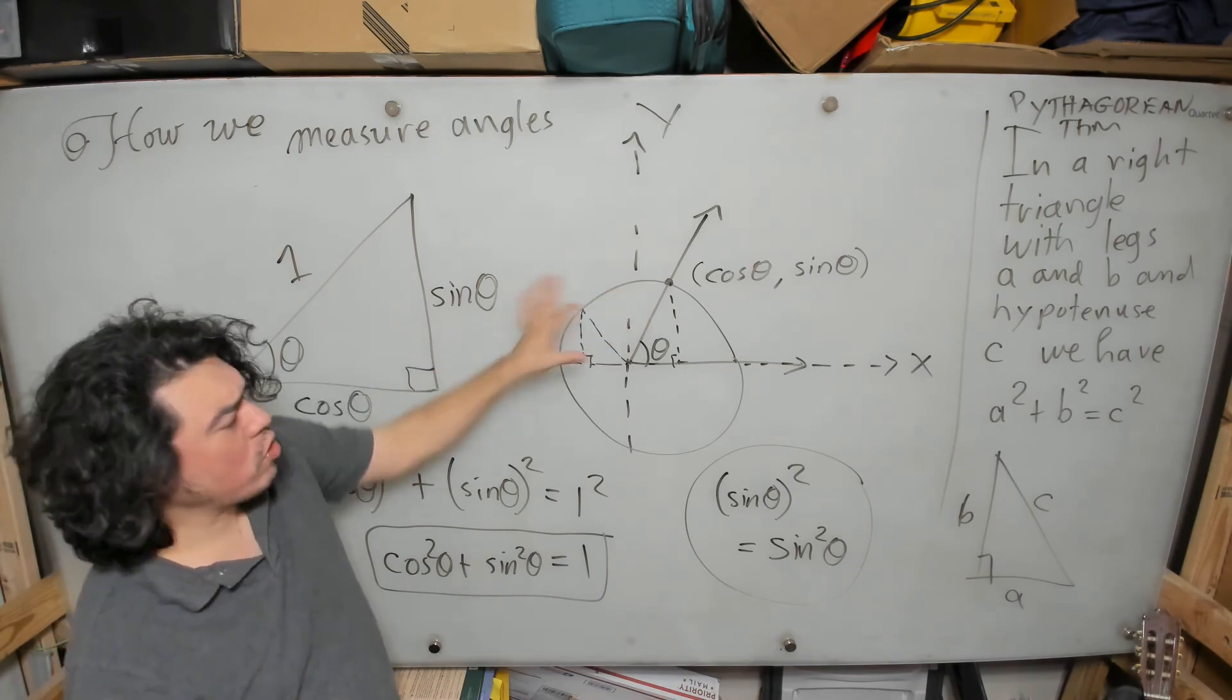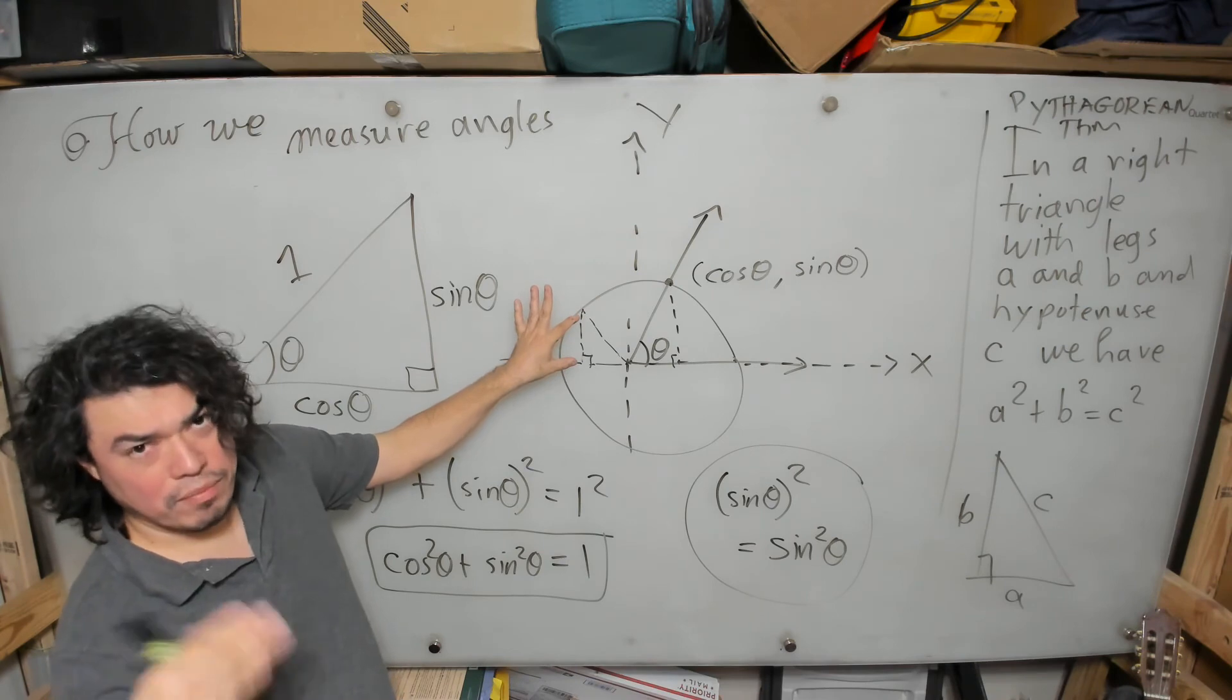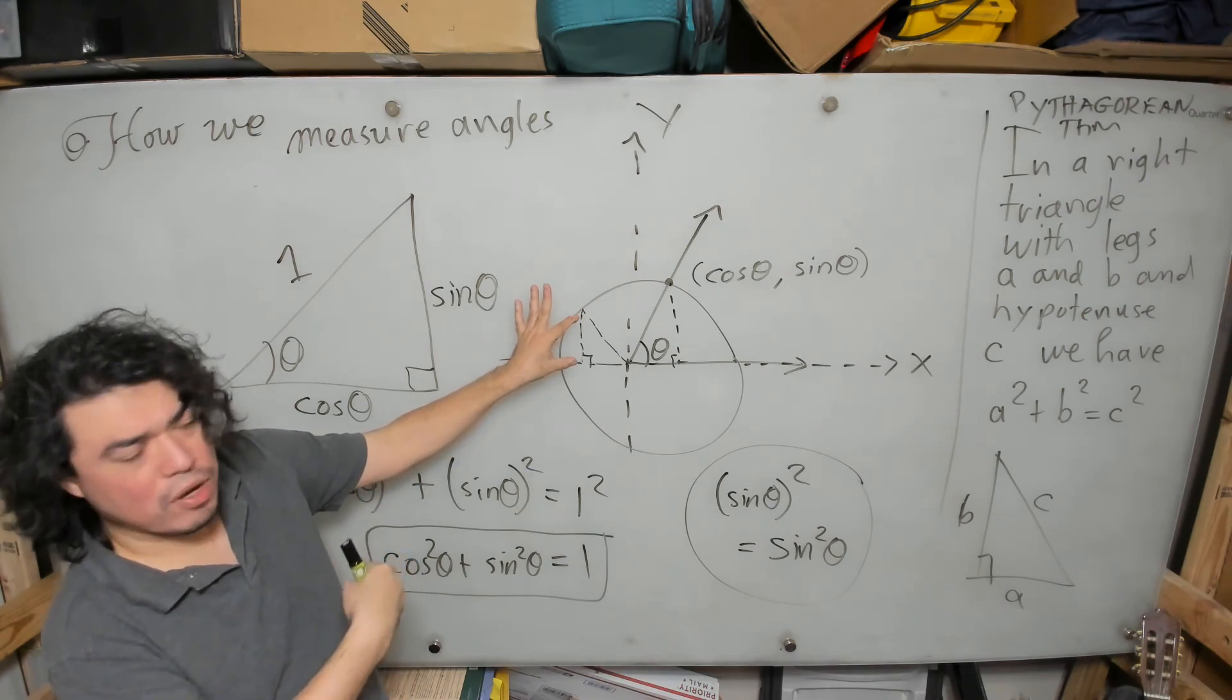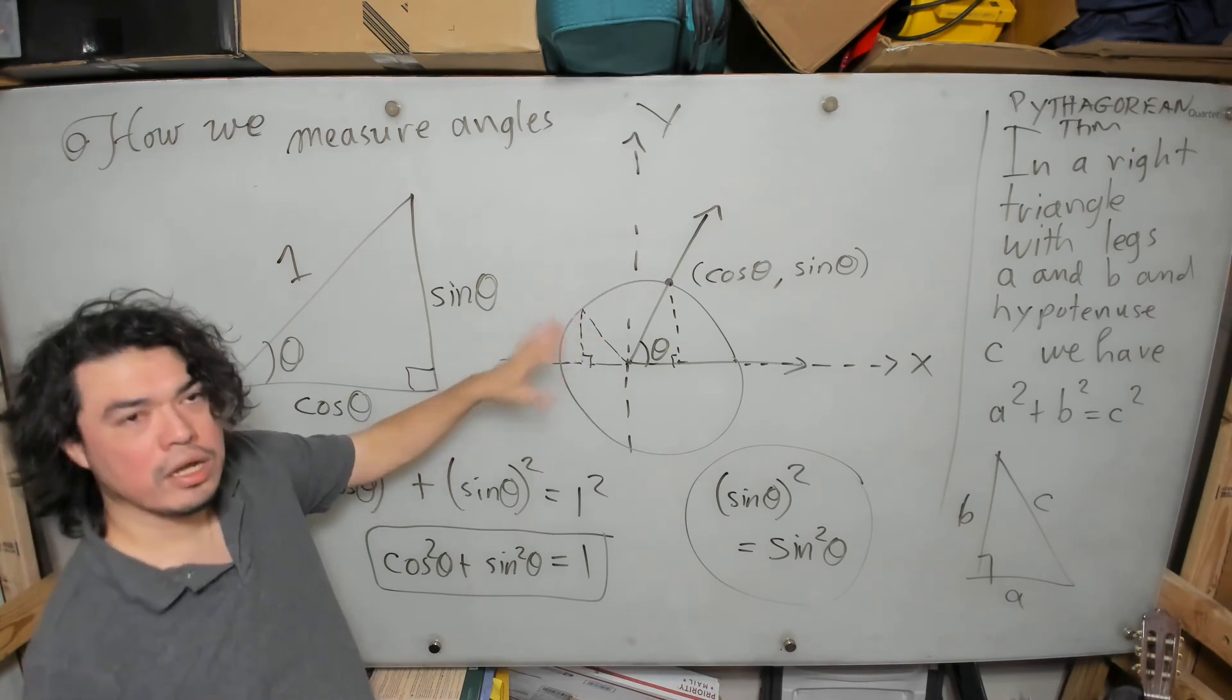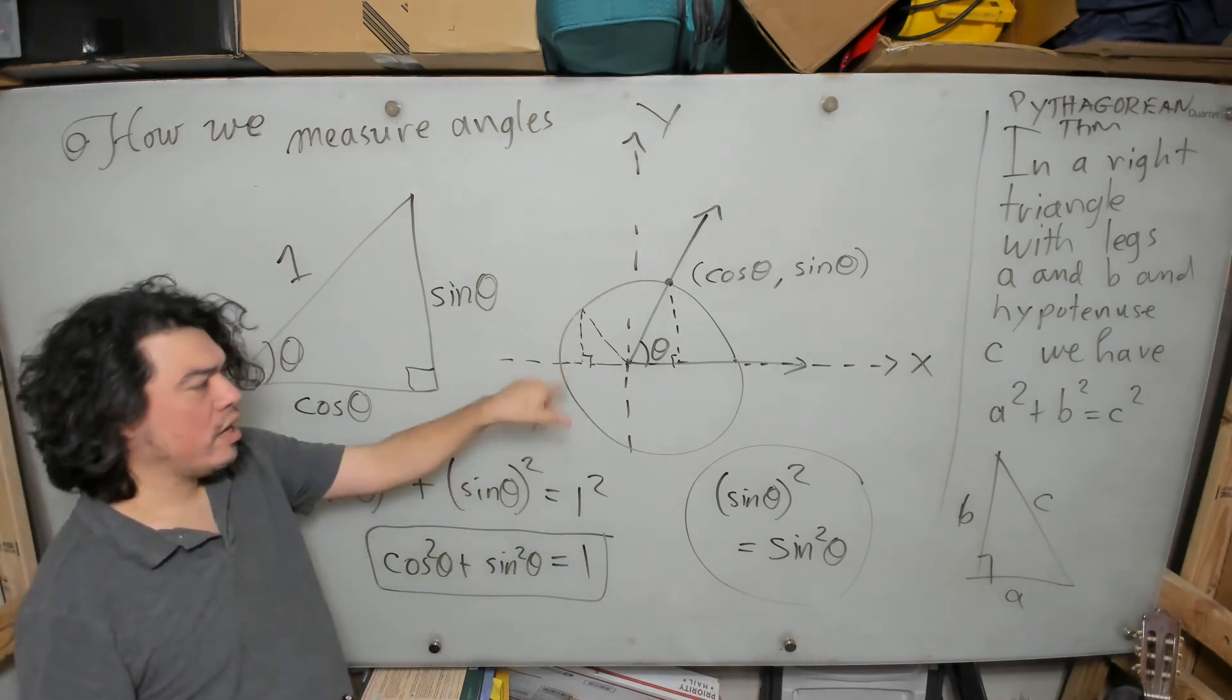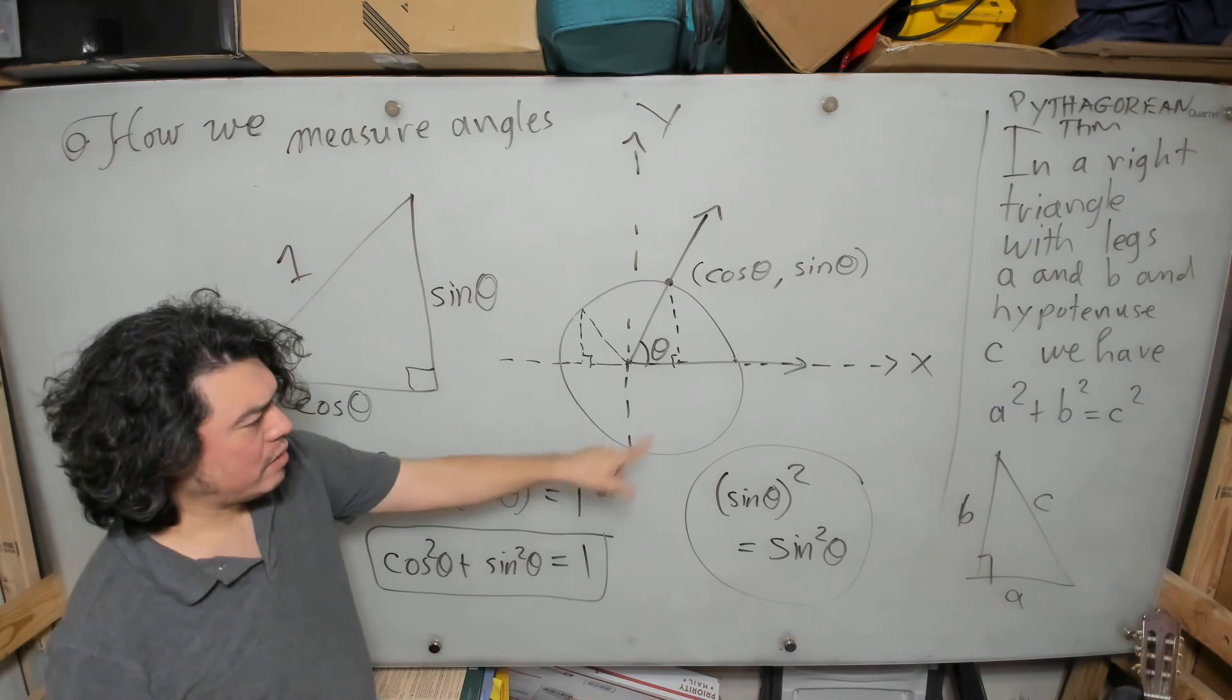That would be the cosine, or at least that would have the magnitude of the cosine—the cosine would actually be negative, of course. This side length would also have the magnitude of the sine; in this case it would still be positive. But you can see that because we apply the Pythagorean theorem there, it would still give us this result. Same thing no matter where the terminal side is on the unit circle.